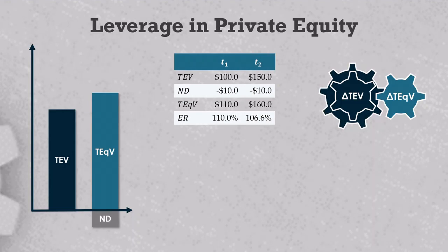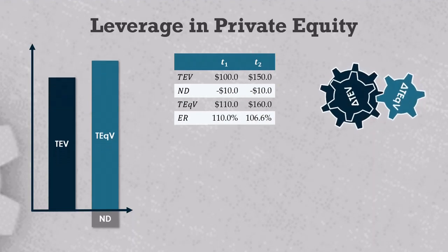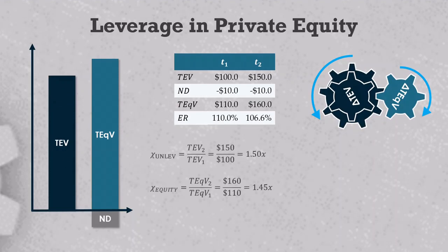Here again, in absolute terms, both TEV and equity value grow by 50, but in relative terms, the equity value grows less than the enterprise value. The enterprise has a return multiple of 1.5x, while the equity has a return multiple of 1.45x.